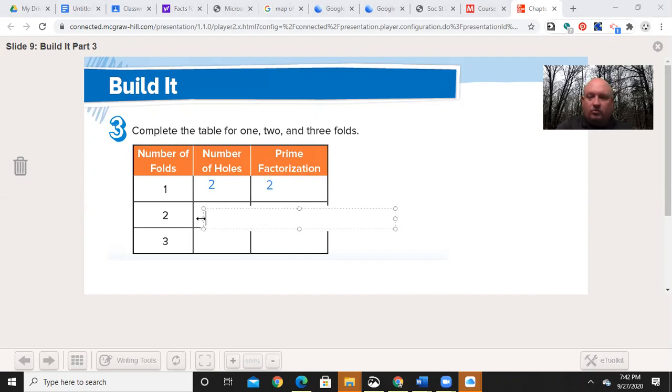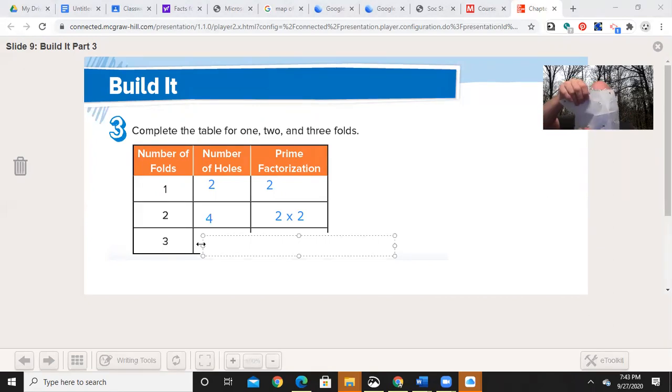We knew that when there was one fold, there was two holes. That prime factorization was a two. When we had two folds, there were four holes, not a seven. Four holes. And that was two times two. How many do you think there will be? Let's see if you're right. Open it up. We have eight holes. So let's put in the eight here. And our prime factorization of that is two times two times two. So go ahead and fill that in.